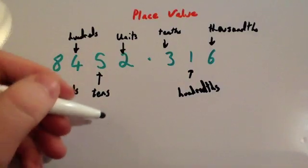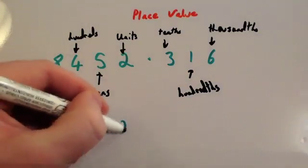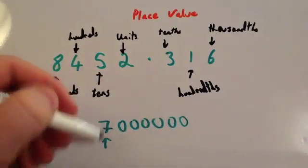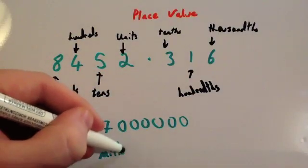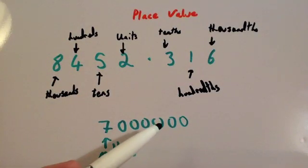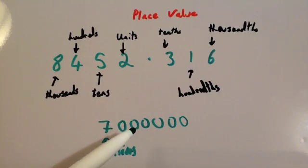Also be aware that if you've got a number like this, that would be millions. So you'd have units, tens, hundreds, thousands, tens of thousands, hundreds of thousands, millions.